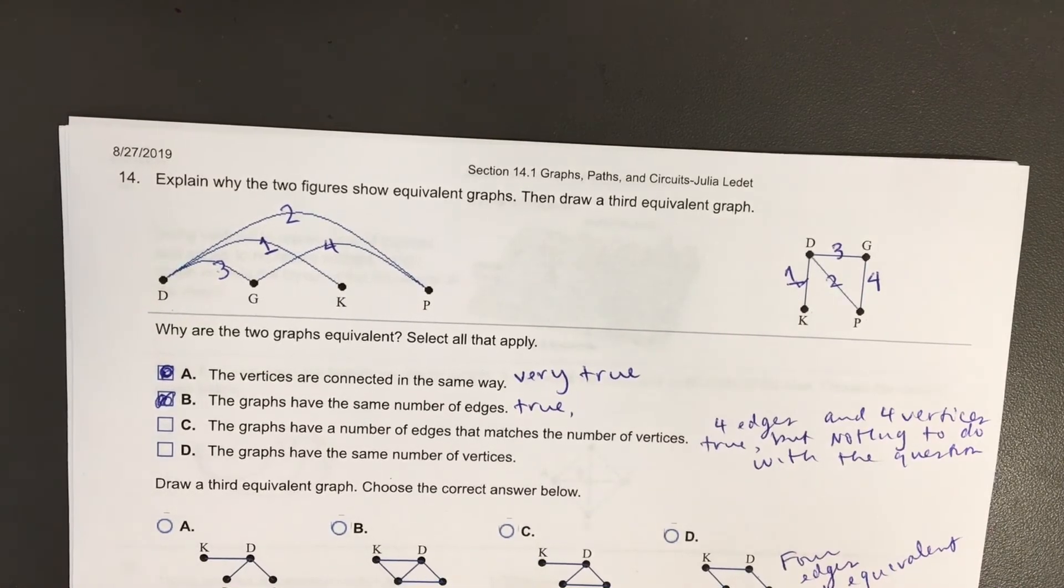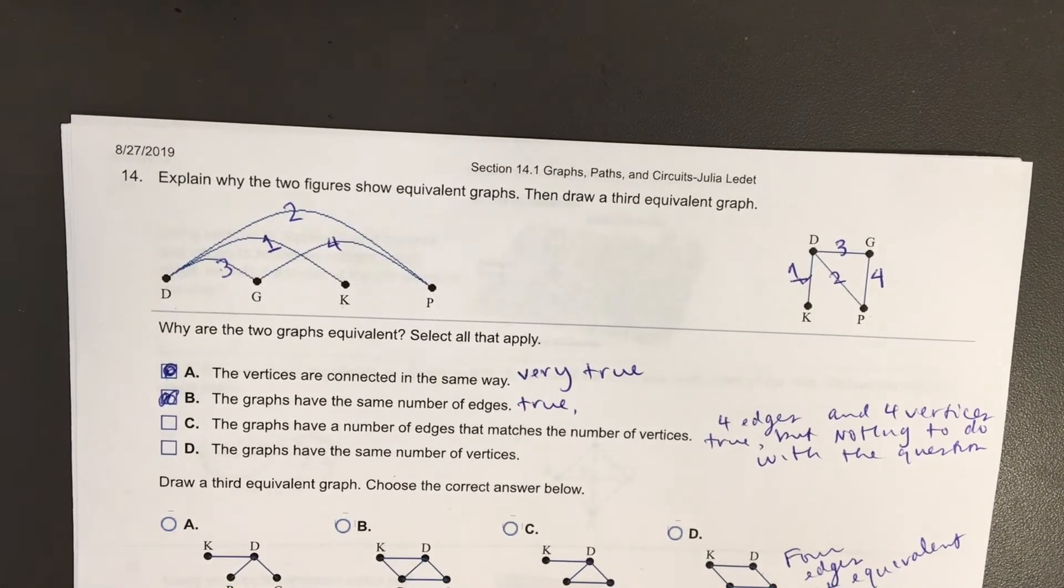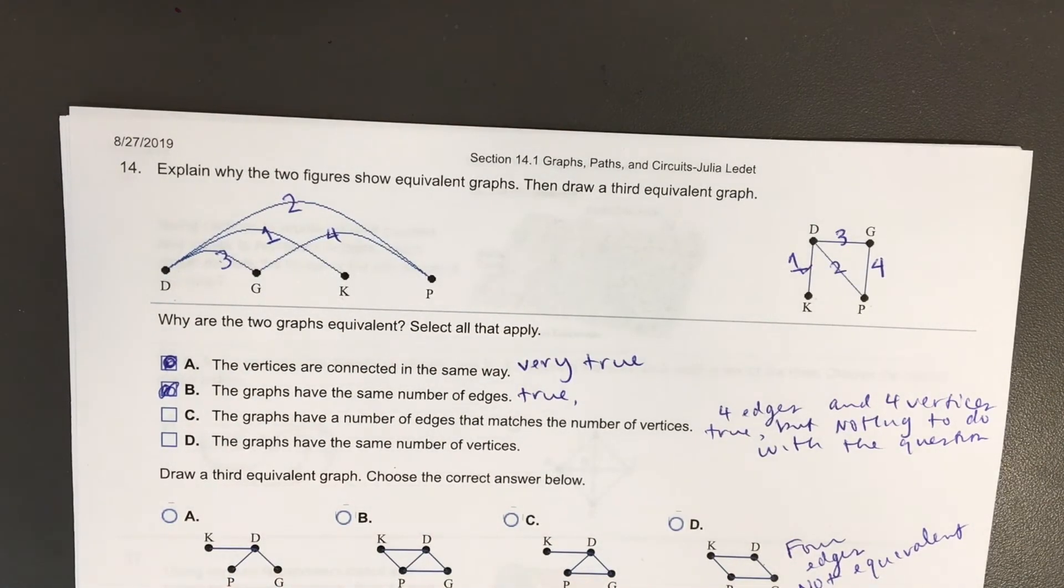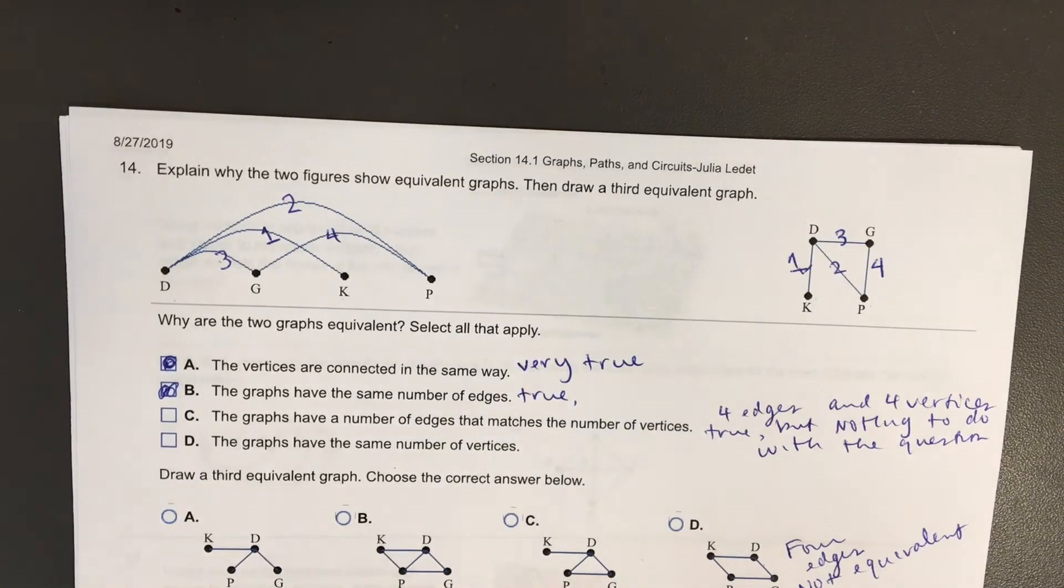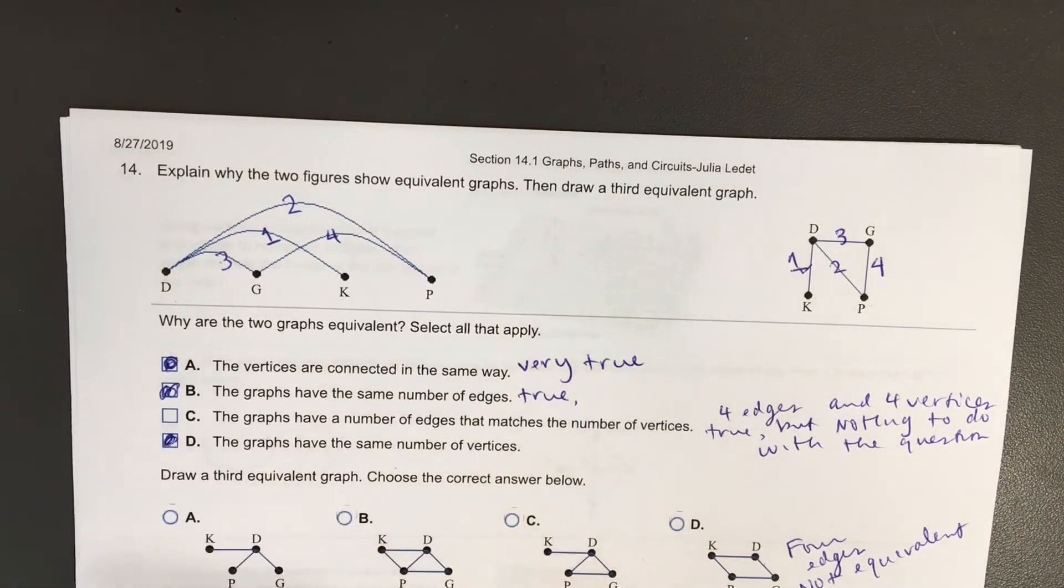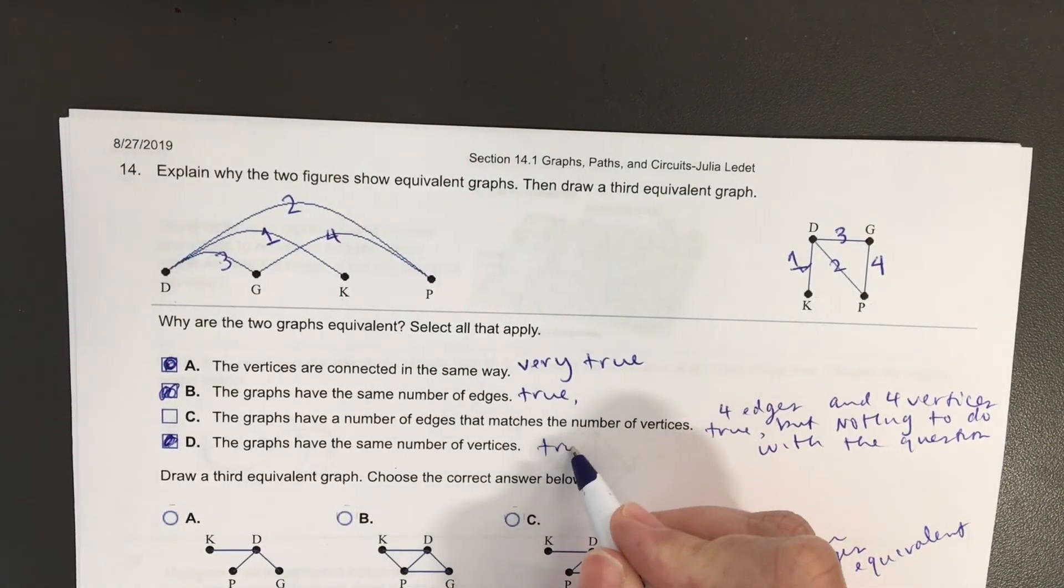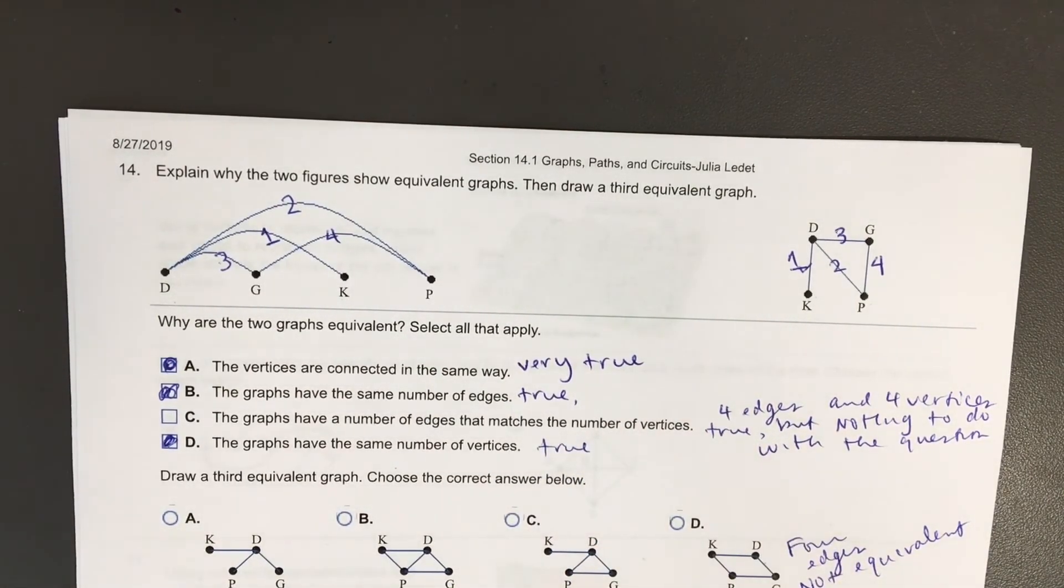The last one, the graphs have the same number of vertices. Well, look at these four pictures again. They all have four vertices. Does that mean the graphs are equivalent? No. But the computer wants you to select that one as well. I would have only selected part A. Last year when I worked this problem for the first time, I only selected part A, and a student raised her hand and she said the computer's marking that wrong.